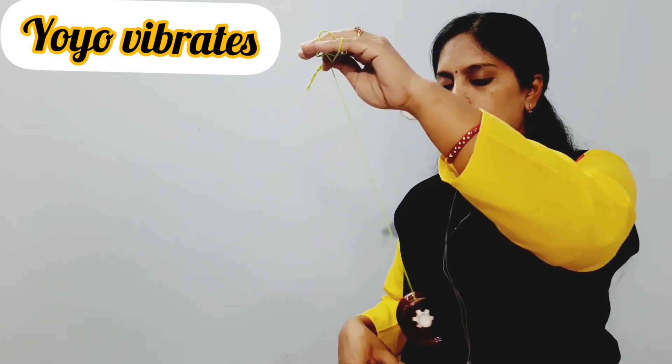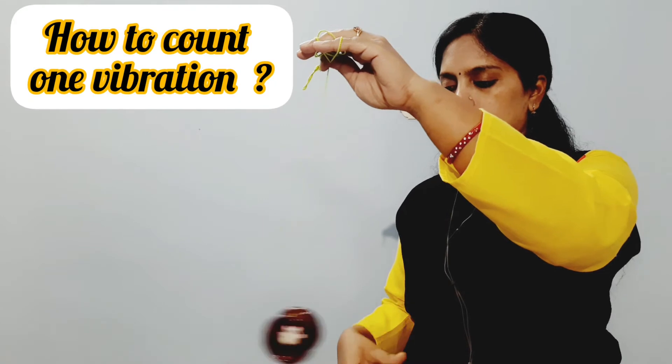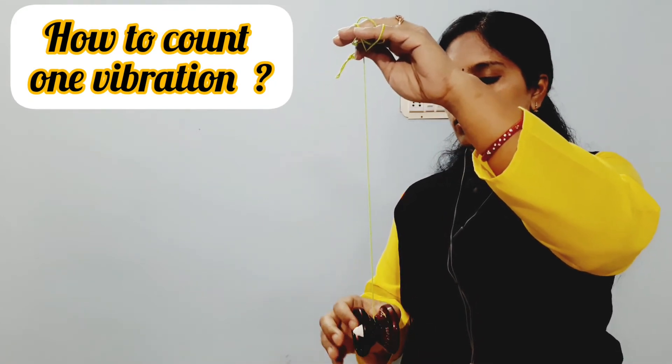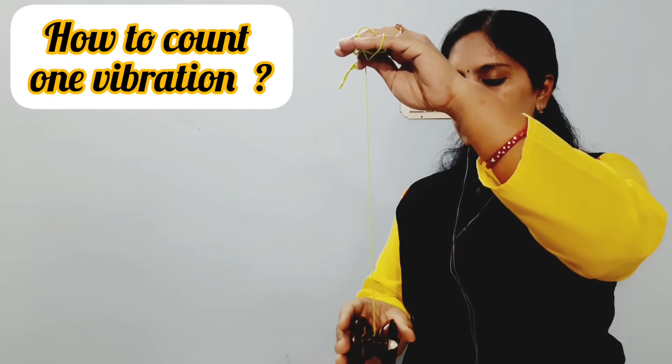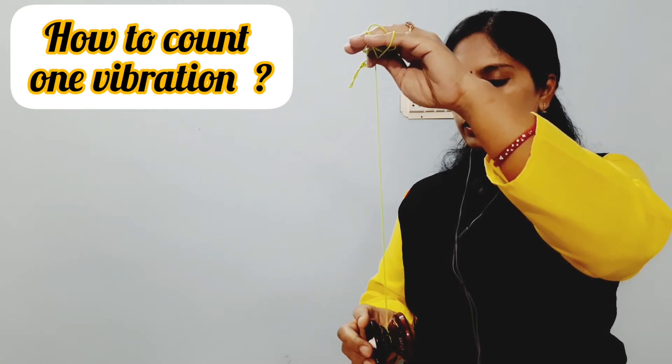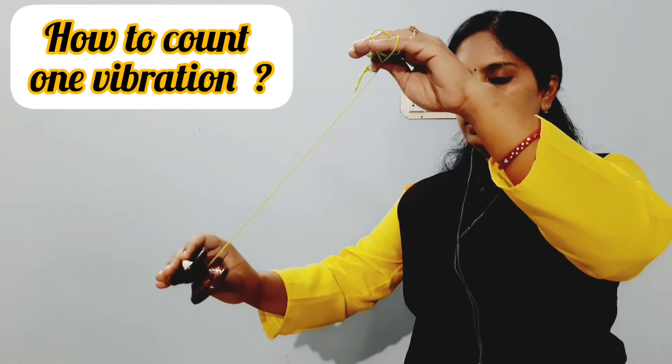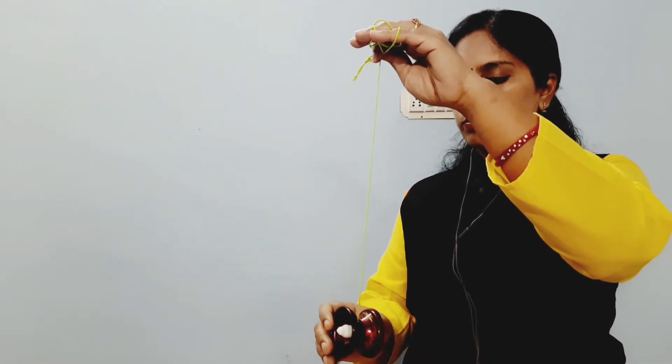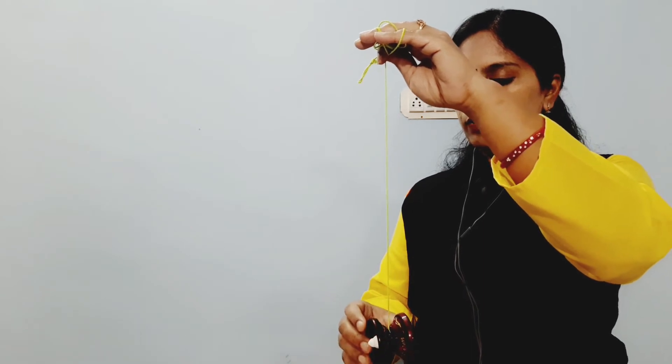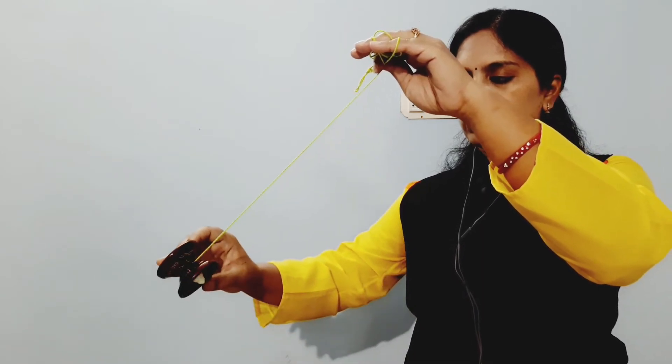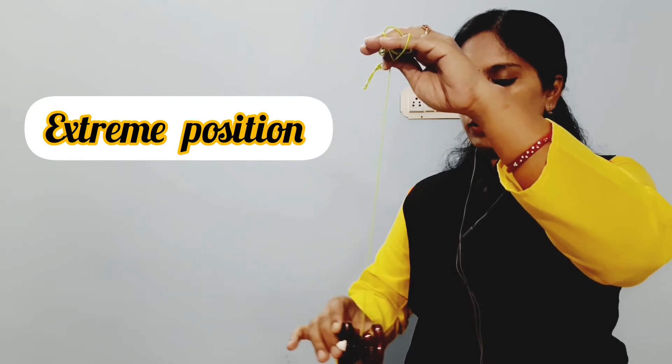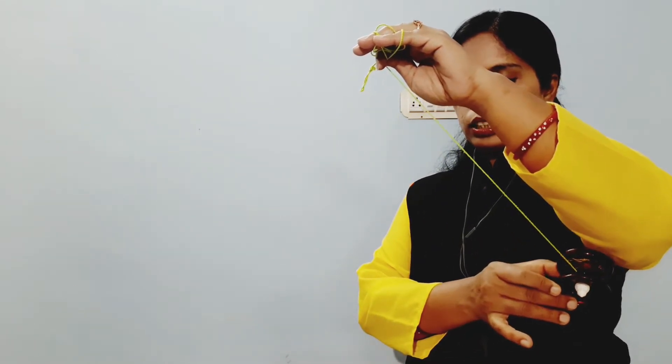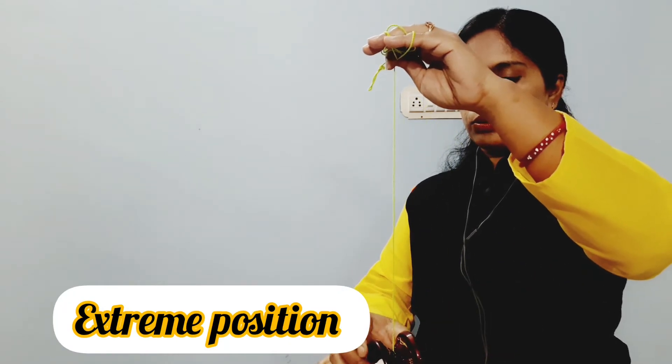we will see how to count one vibration. This is called mean position when yoyo is at rest and when I take it to other side, this is called extreme position. So one vibration means, start from the mean position, go to one extreme position, come back to mean position, go to another extreme position and then again come back to mean position.